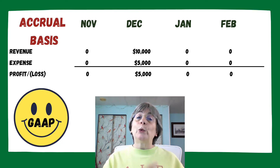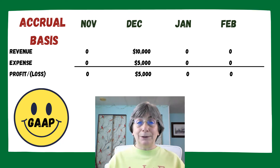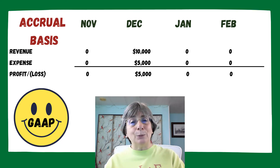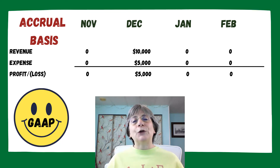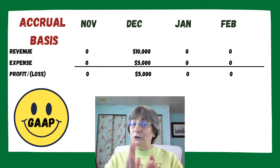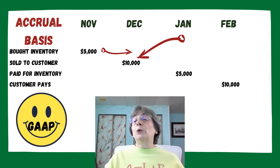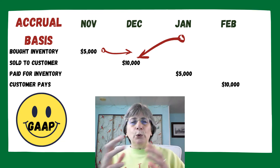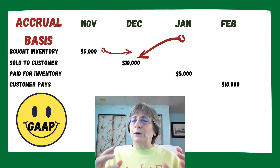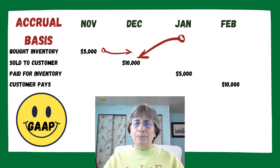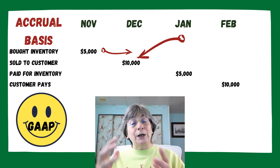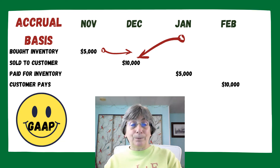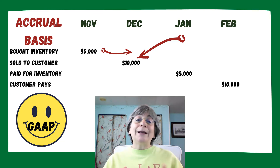When we're talking about accrual-based accounting, we're talking about using accounts like accounts receivable and accounts payable — and that's part of what helps us capture things in the month where they need to be captured. If you're using accrual-basis accounting, we need a mechanism that moves revenues and expenses around to get them into the correct accounting period. That mechanism is called adjusting journal entries. And there's a playlist for that — you'll find the link in the description.